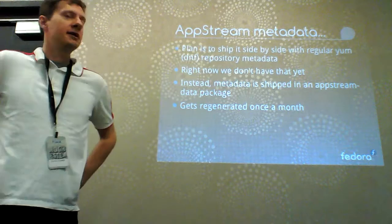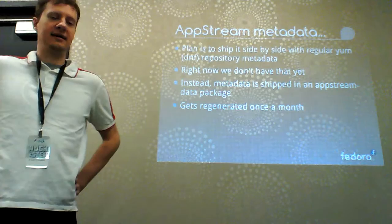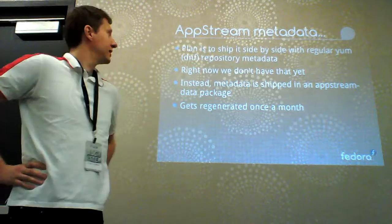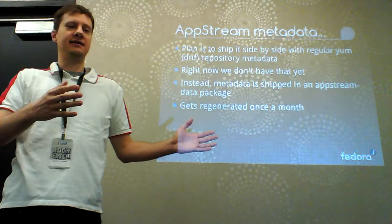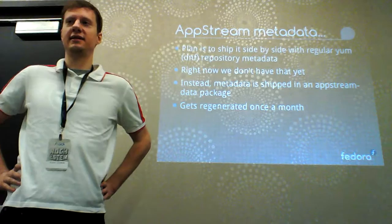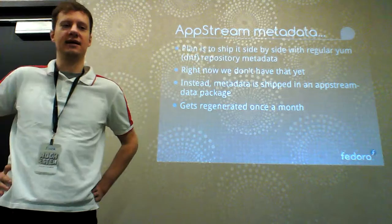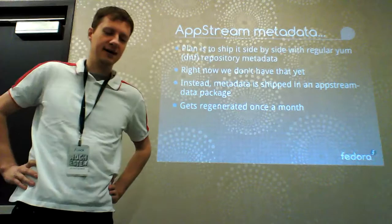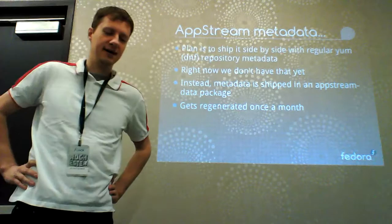The current state of AppStream metadata is that it isn't yet shipped alongside YUM metadata, but there's a plan to start doing that really soon. Right now there's a separate package that contains the AppStream data, updated manually about once a month. It's not ideal, but it works since new applications don't arrive that frequently and old descriptions still apply. So if you write new AppData and it doesn't show up in Fedora instantly, this is why — there's a manual process involved in regenerating the metadata package.